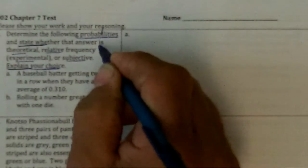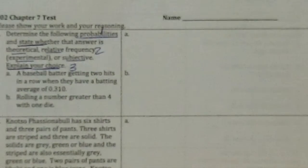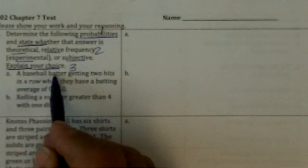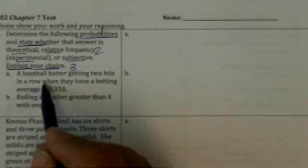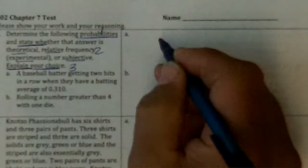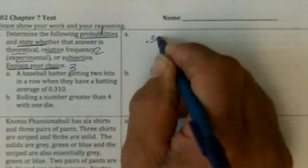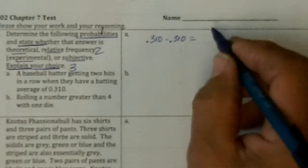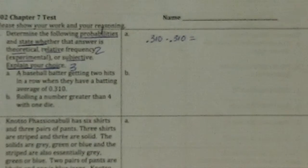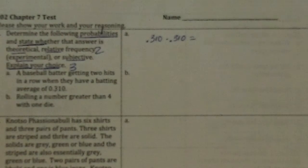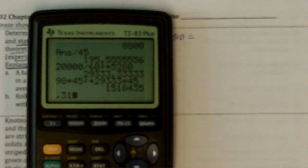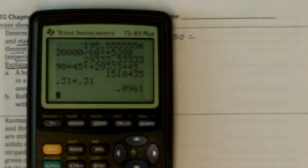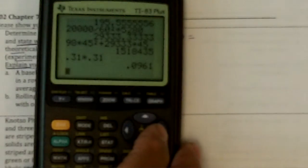First, the probability. A baseball batter getting two hits in a row. Well, the probability of the first hit is 0.310 times the probability of the second one, 0.310. Turns out to be a probability of 0.31 times 0.310 is 0.0961.